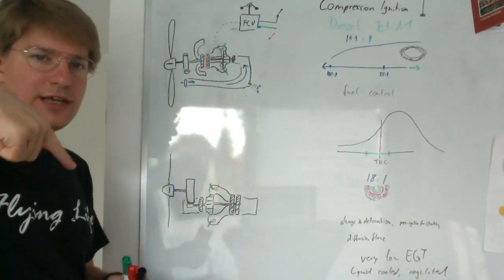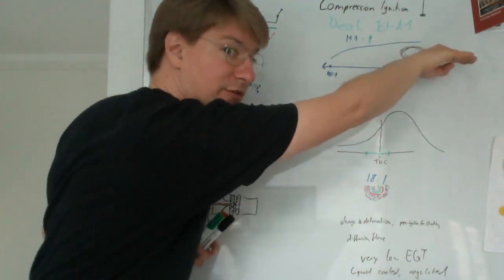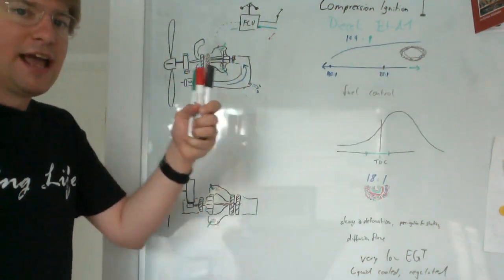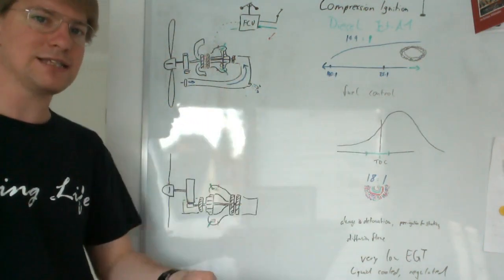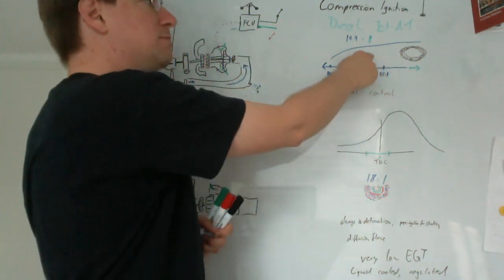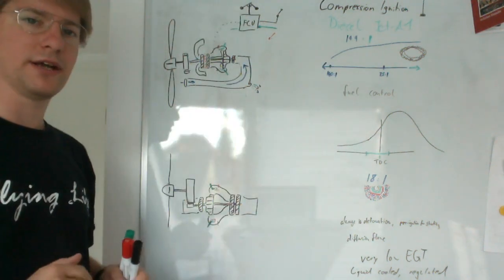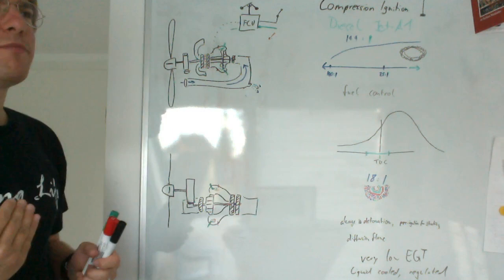If you ask it for more power, the EGT will come up as we dump more fuel into the process and move to the right in this mixture diagram. Then the turbine spins up, sucks in more air, and the air-fuel mixture goes back here because we are sucking in more air and the EGT comes back down again.